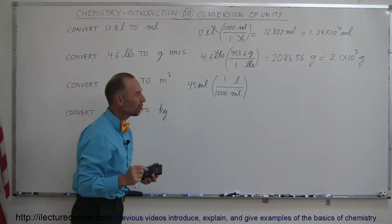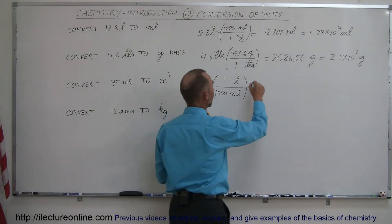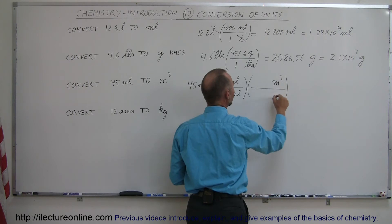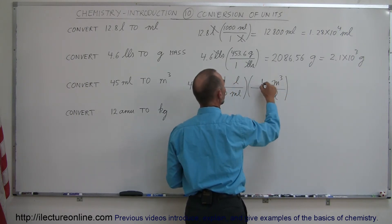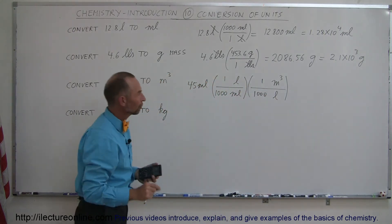But we didn't want liters, we wanted cubic meters. So now we have a second ratio where we convert from liters to cubic meters. Since we want cubic meters, that goes on the top. Liters, we want to get rid of that, so it goes on the bottom. And one cubic meter is a thousand liters. That's how we convert from one to the other.